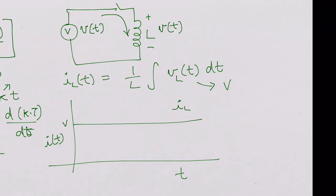So IL would be 1 over L, integral from 0 to t, V dt. That is V over L, and you integrate it from 0 to t, which would be Vt over L.